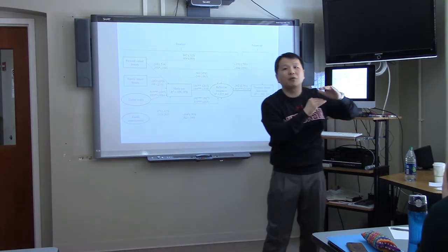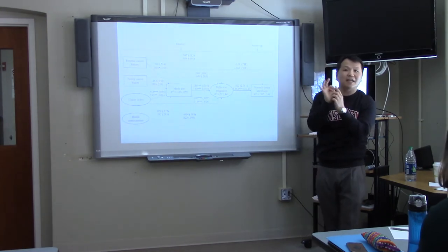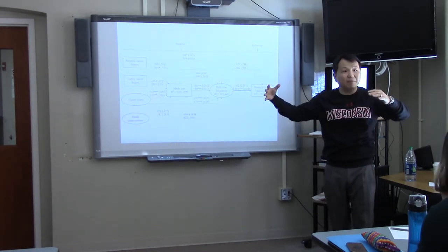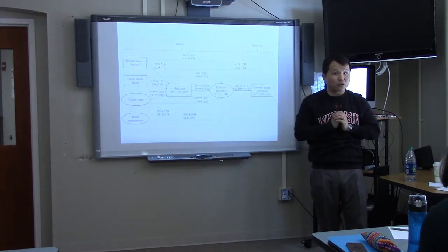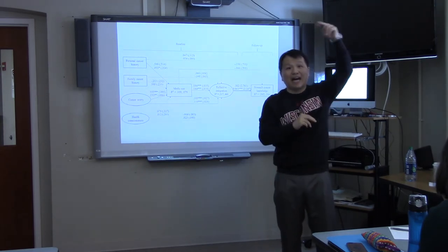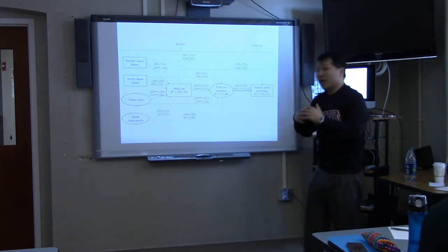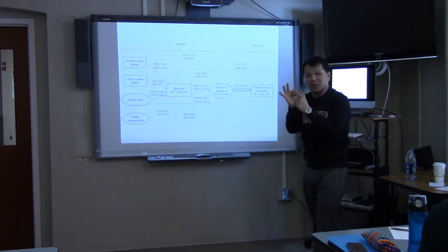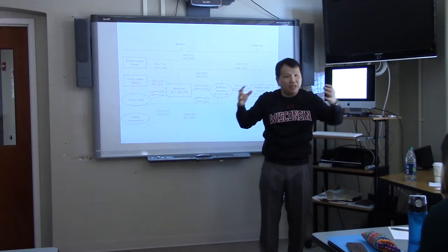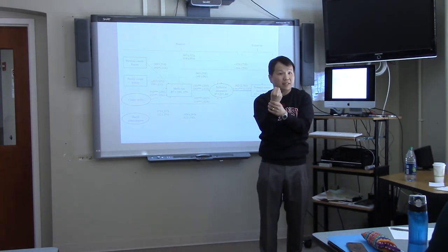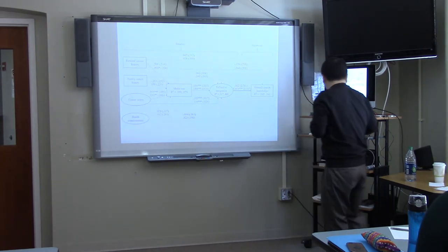Upper reachability, range, and extensity are highly correlated, so using principal component analysis we combine them into a comprehensive social capital index. Using that index, I divided individuals into two groups — high and low social capital. I found that reflective integration increases stomach cancer knowledge only among those with high levels of social capital. Among those with low levels of social capital, even if they talk about and think carefully about media information, they are less likely to learn from it.